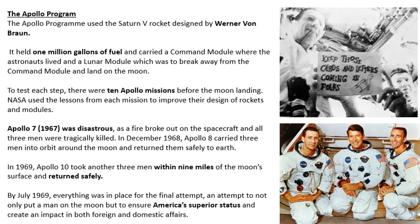There were 10 Apollo missions before the moon landing, and every mission used different astronauts and pushed the boundaries a little further. The Apollo Program used the Saturn 5 rocket, designed by Werner Von Braun. The Saturn 5 held 1 million gallons of fuel, carried a command module where the astronauts lived, and a lunar module which would break free and land on the moon. NASA used lessons learned from each mission to improve the design of their rockets and modules, though it was dangerous — the crews were going into the unknown every time.